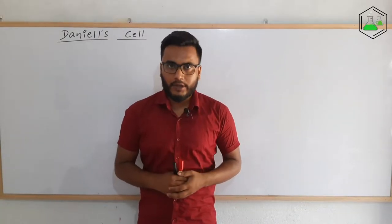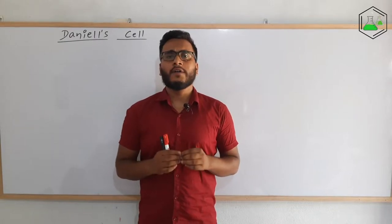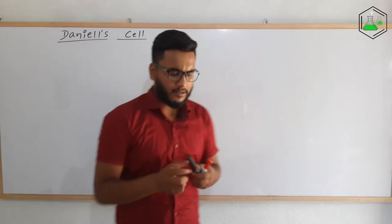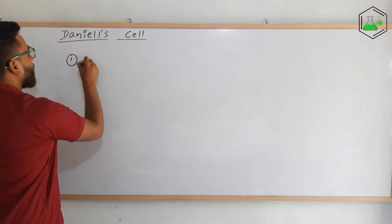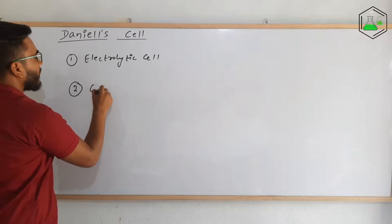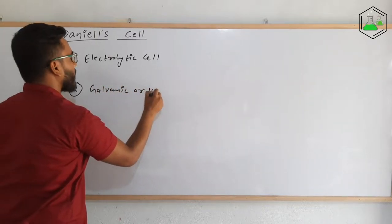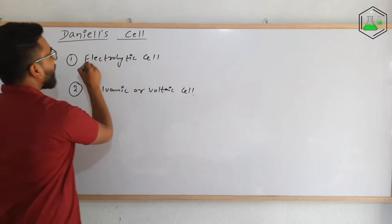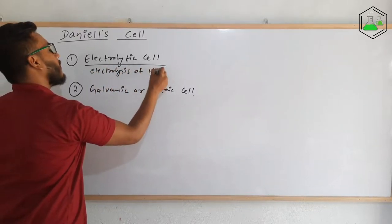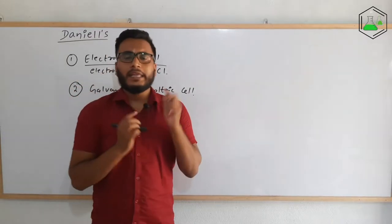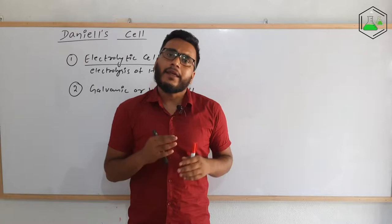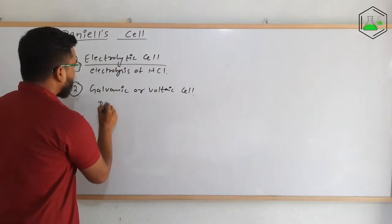In my previous video I have already explained about electrochemical cells. Electrochemical cells are used to convert either electrical energy into chemical energy or chemical energy into electrical energy. There are two types: the first one is electrolytic cell and the second one is galvanic or voltaic cell. An example of electrolytic cell is electrolysis of hydrochloric acid, where we convert electrical energy into chemical energy. In a galvanic or voltaic cell we convert chemical energy into electrical energy, and an example of this is Daniel's cell.